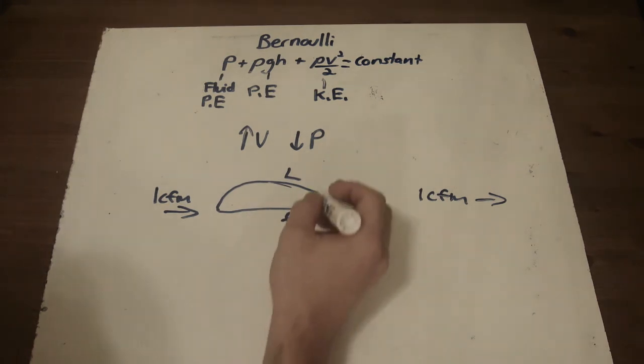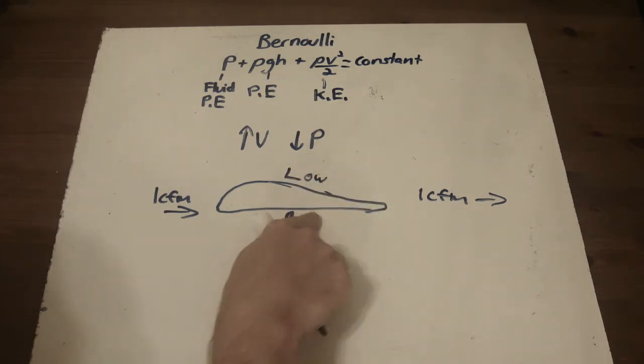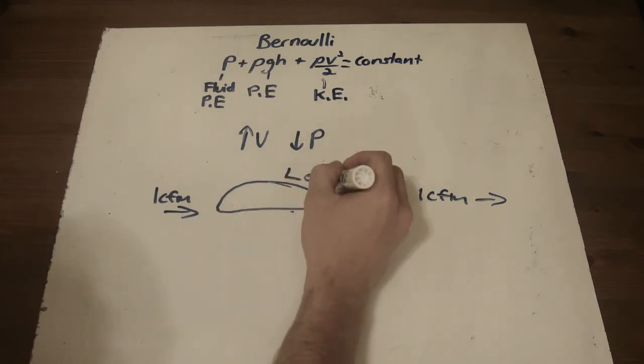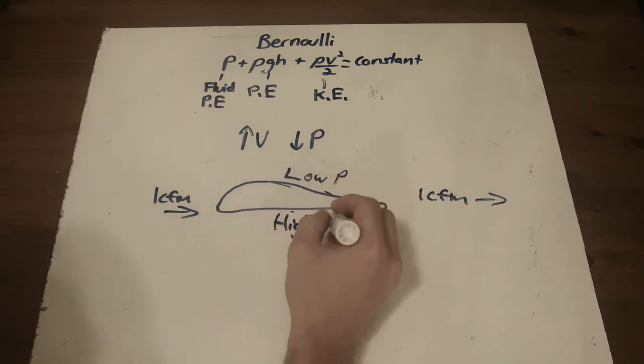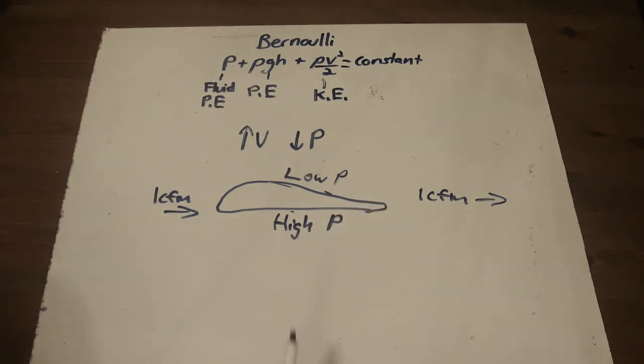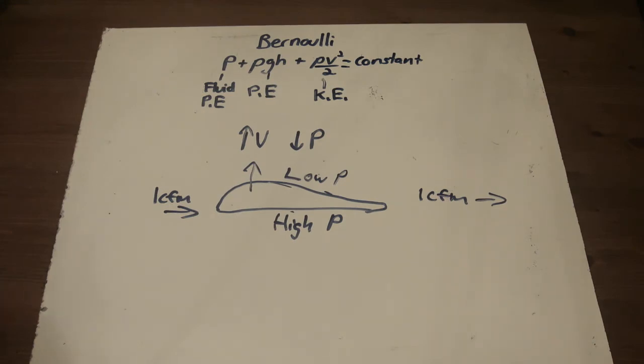So what happens is you have a low pressure at the top and a high pressure at the bottom. And what this does is this creates an upward force pushing the wing up.